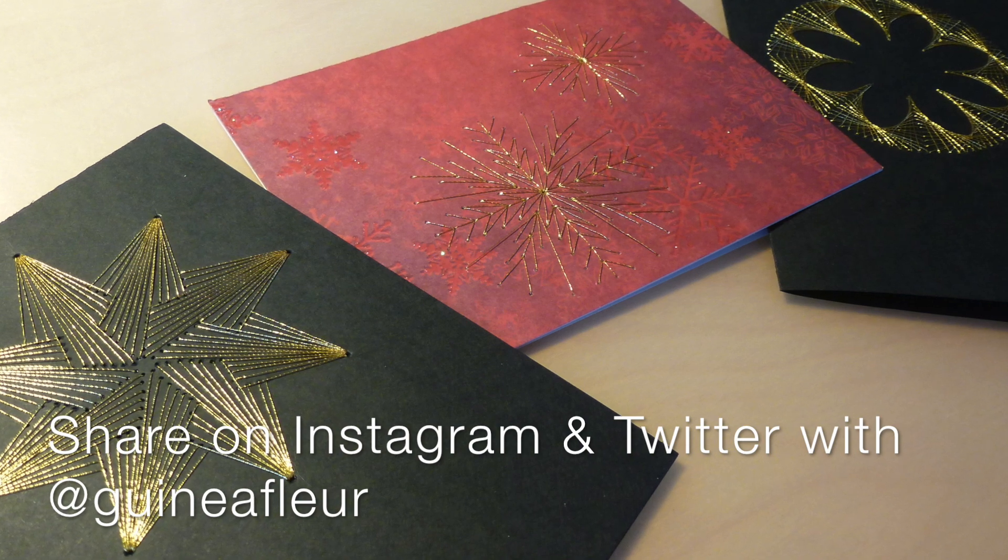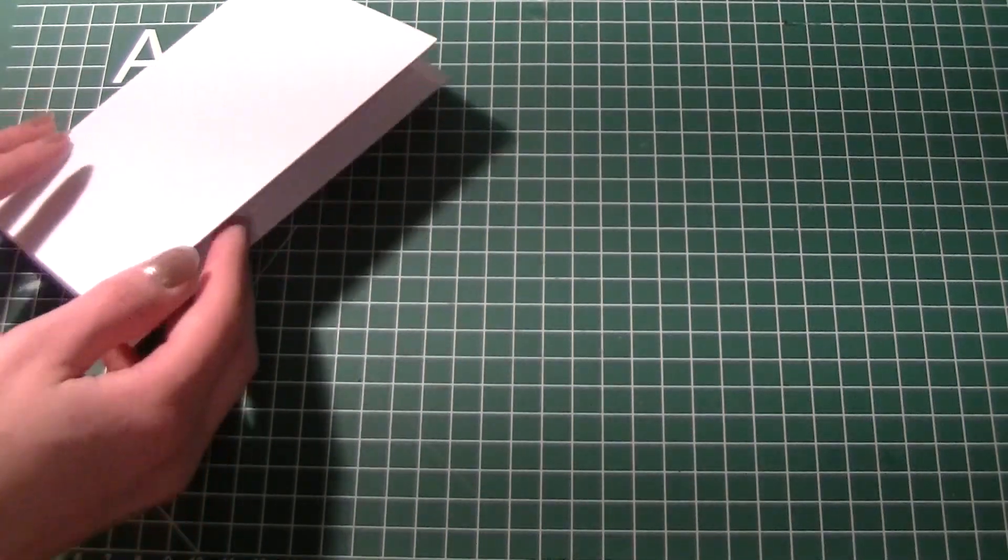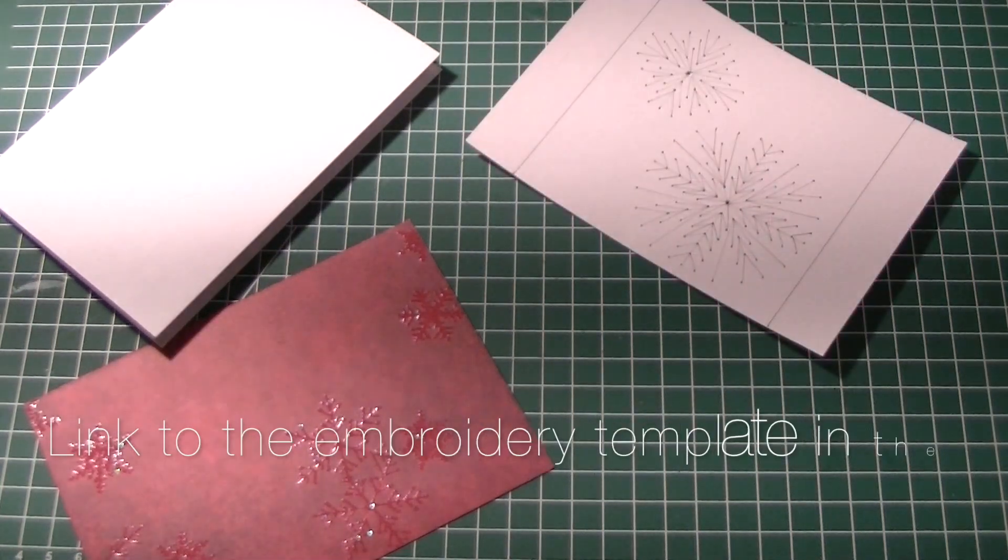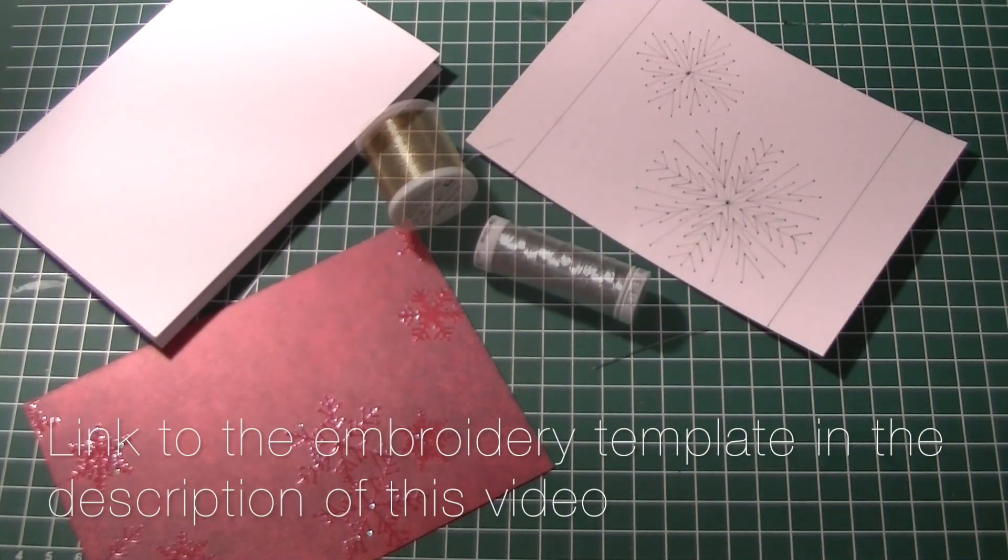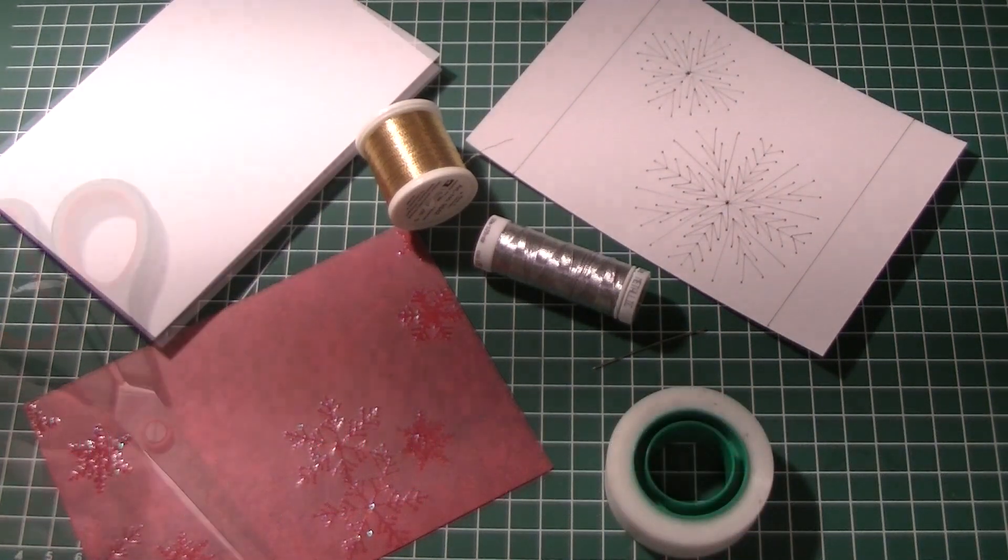You will need a folded card, some decorative cardboard of the same size as the front of the card, an embroidery template, a needle and embroidery thread, tape, scissors, something to make small holes in the cardboard, and glue.